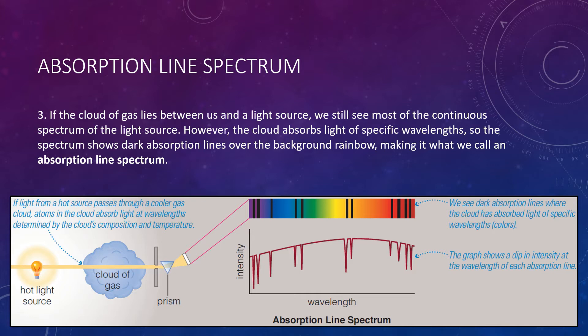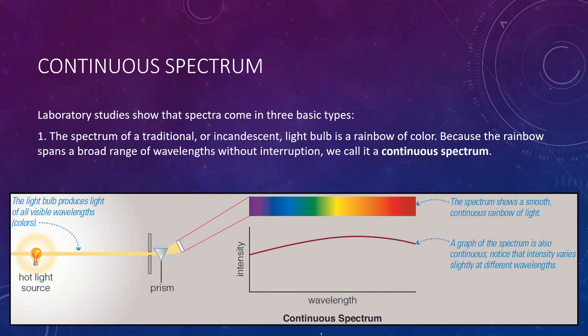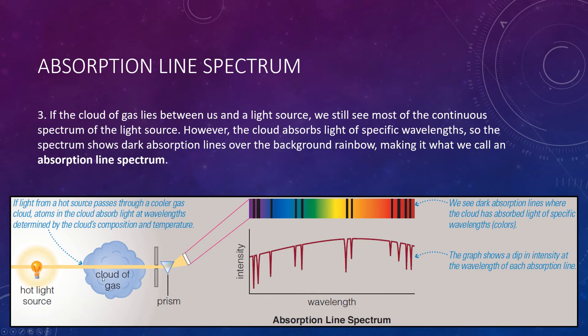Here we can see what happens in each situation. A standard light bulb gives a full rainbow and a constant intensity graph. But if we place a cloud of gas between the prism and the light source, the gas absorbs some of that light, and we see the full rainbow with small pieces missing — the intensity drops at those regions. So there are three scenarios: a continuous spectrum from a direct light source, an emission line spectrum from a cloud of gas giving off light, and an absorption line spectrum when something blocks part of the background light.